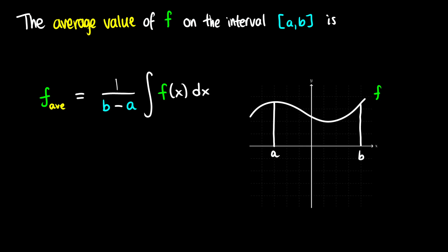So what does this look like? The average value of a function is equal to the integral of f of x dx — that is, the area underneath the curve — and then we divide by the length of the interval. So you can think of this as 1 over b minus a times the integral, and that gives us the average value.